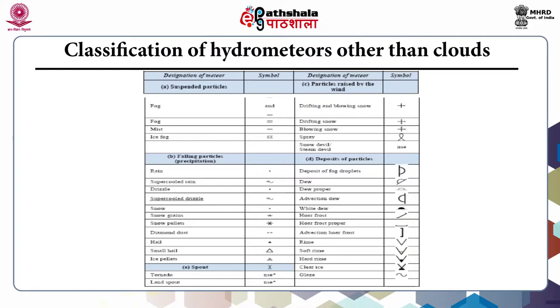In the falling particles, you can see rain, supercool rain, drizzle, supercool drizzle, snow, snow grains, snow pellets, diamond dust, hail, small hail, and ice pellets.